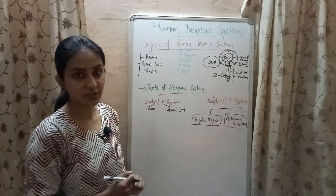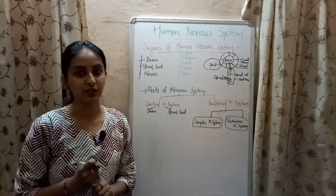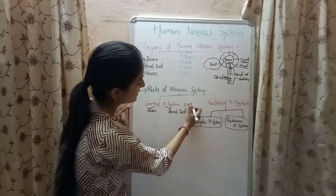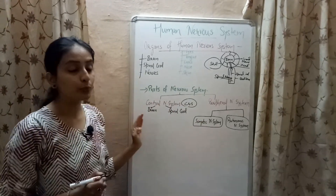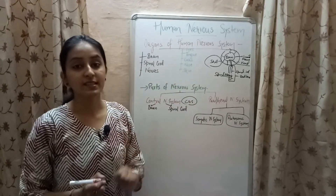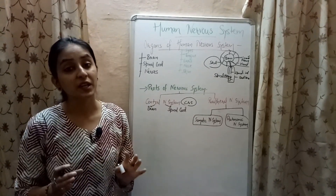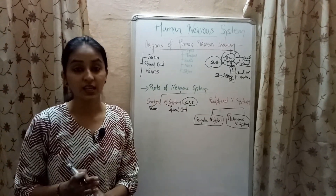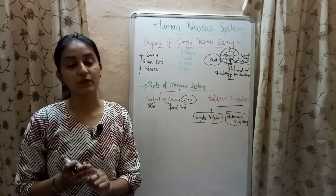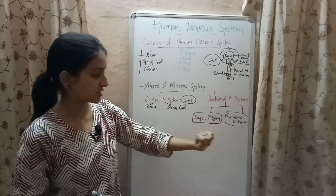There are two parts of the nervous system: central nervous system and peripheral nervous system. The central nervous system consists of brain and spinal cord. The peripheral nervous system is made up of nerves — cranial nerves, spinal nerves, and visceral nerves together form the peripheral nervous system.